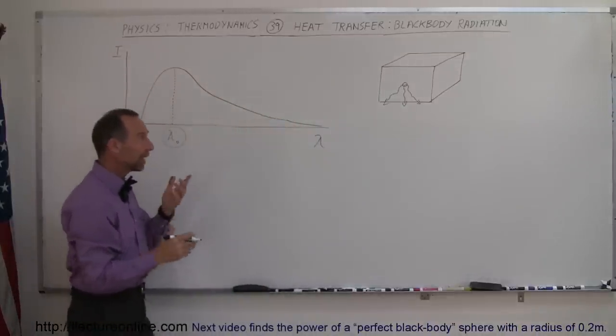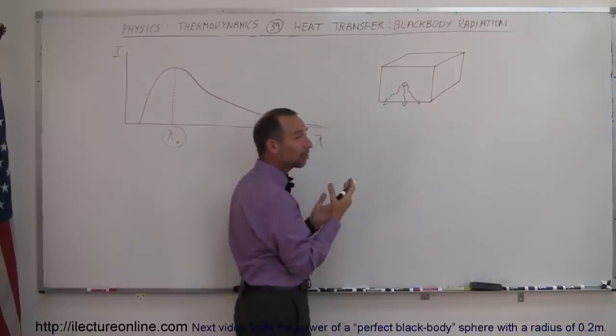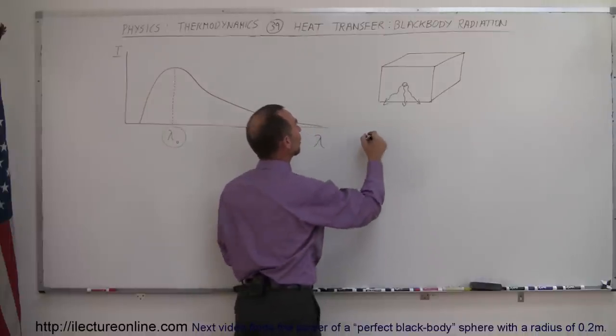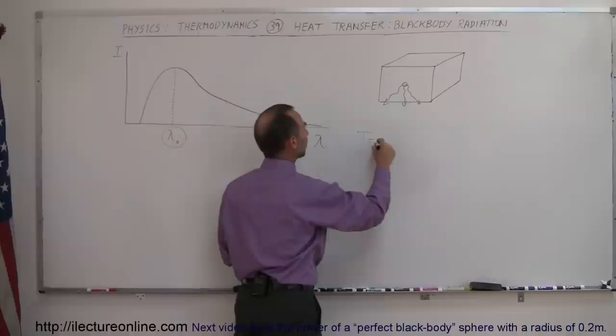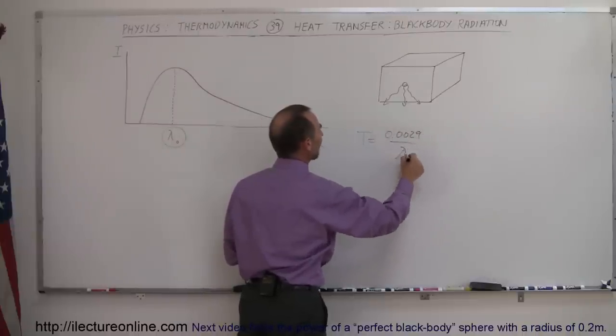That radiation will have a specific wavelength and frequency depending upon its temperature, and from Wien's law, we know that the temperature is equal to 0.0029 divided by the wavelength.